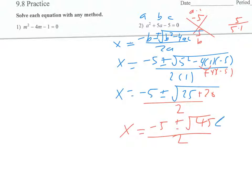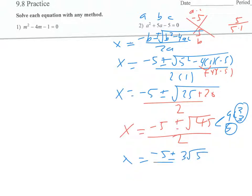I want to break down 45 as nine times five, and nine breaks down to three times three. So the twin threes go outside, and the lone five stays inside. That gives us negative five plus or minus three radical five, all over two. We check if we can reduce, but there's no common factor, so we're done.